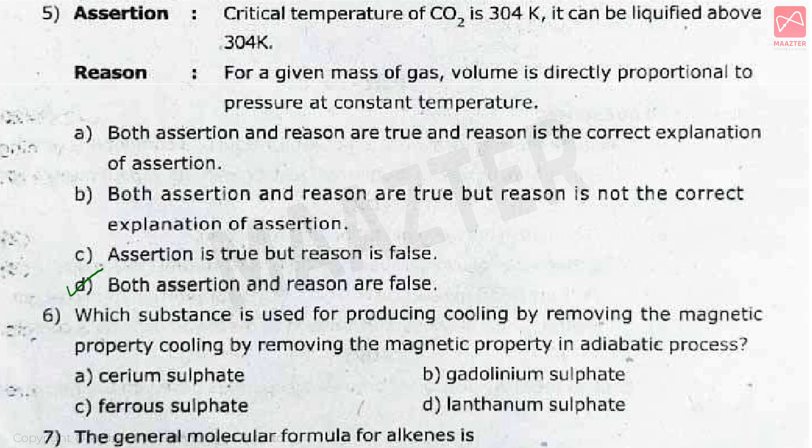The next question: which substance is used for producing cooling by removing magnetic property in an adiabatic process? This is a book-based question. The answer is gadolinium sulphate. Gadolinium sulphate is used in the adiabatic process for cooling by removing its magnetic property.